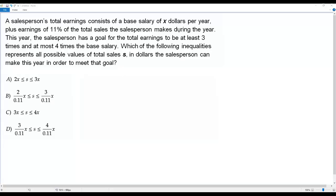This year, the salesperson has a goal for the total earnings to be at least three times and at most four times the base salary. Which of the following inequalities represents all possible values of total sales in dollars the salesperson can make this year in order to meet the goal?